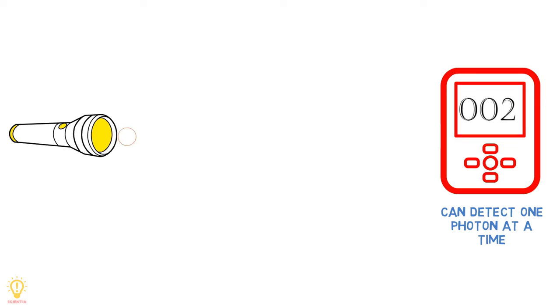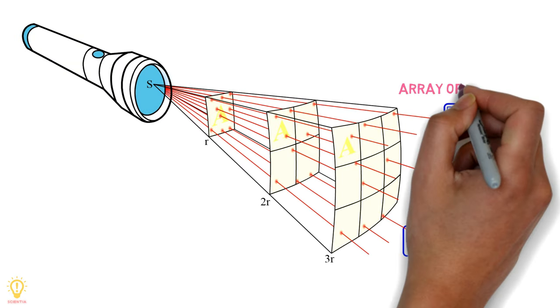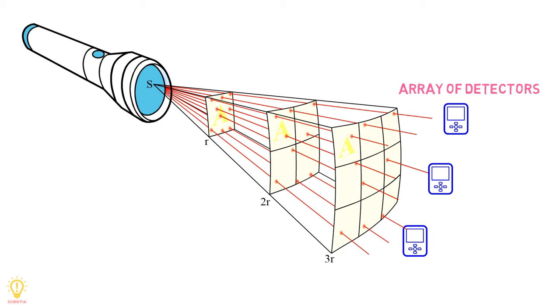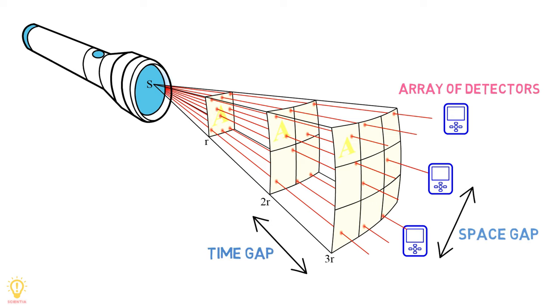Similarly, shine light at a sufficiently sensitive array of photon counters and it receives the light at point locations with spatial gaps between them. When viewed in this way, a light beam always has gaps between its photons, whether the light be very bright or very dim.